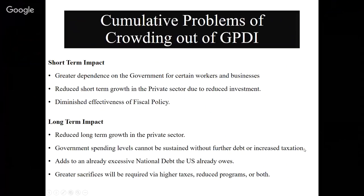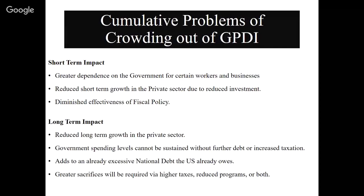The government cannot sustain increased levels of spending forever. They'll eventually have to raise taxes, cut spending, or do both. Look at what happened to Greece, Portugal, and Italy — especially Greece — where they kept borrowing and spending until their national debt was 13 times the size of their GDP. The U.S. has an excessive national debt, the largest in the world, but it's only slightly bigger than our GDP, not 13 times it. If we don't address the national debt, we'll see less government spending, higher interest rates, and higher tax rates. Greece was forced into austerity measures.